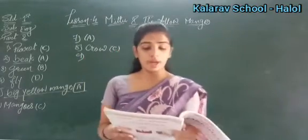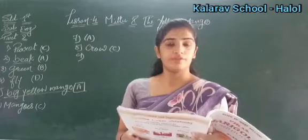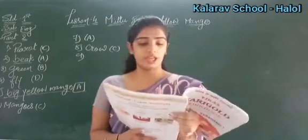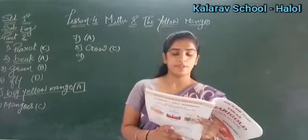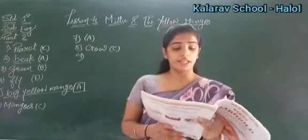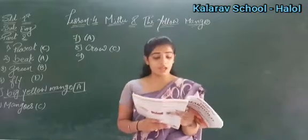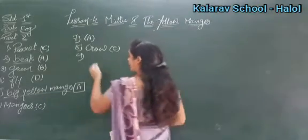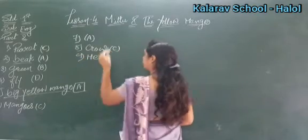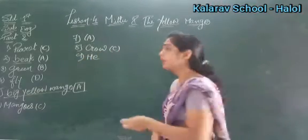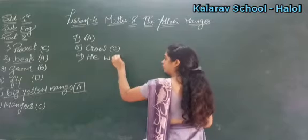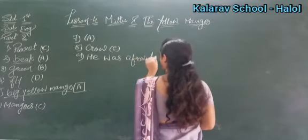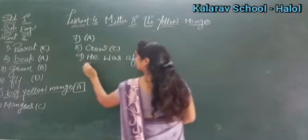Question 9: Why did Mitu fly away? He did not dislike mangoes — he liked mangoes. He was afraid of the crow. So the correct answer is: he was afraid of the crow.